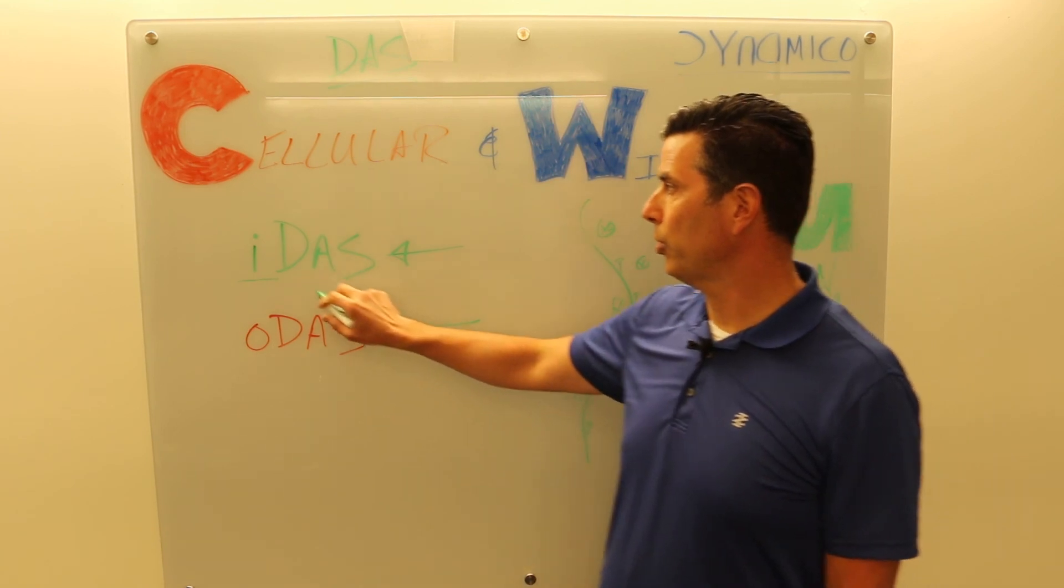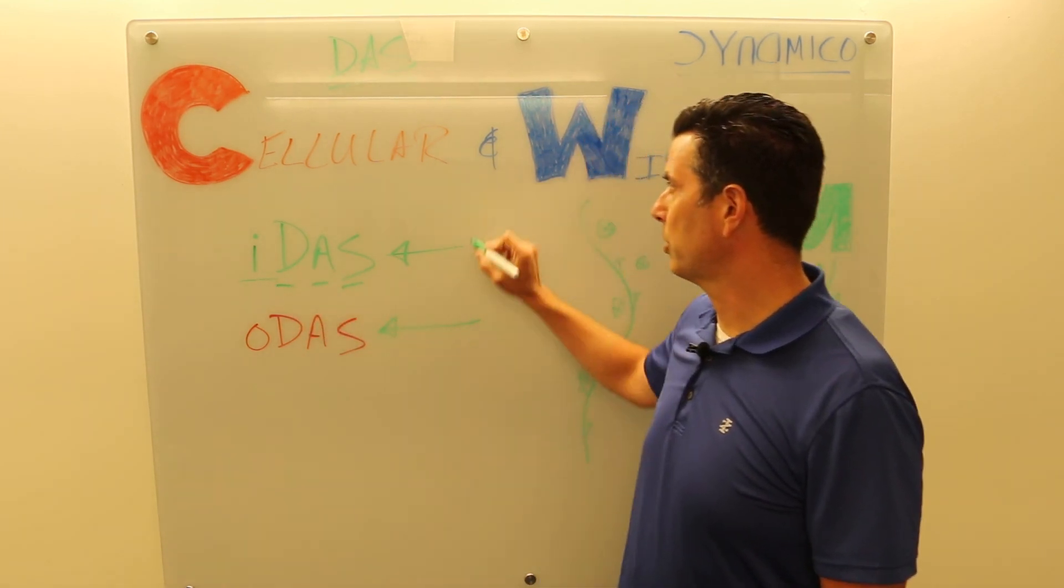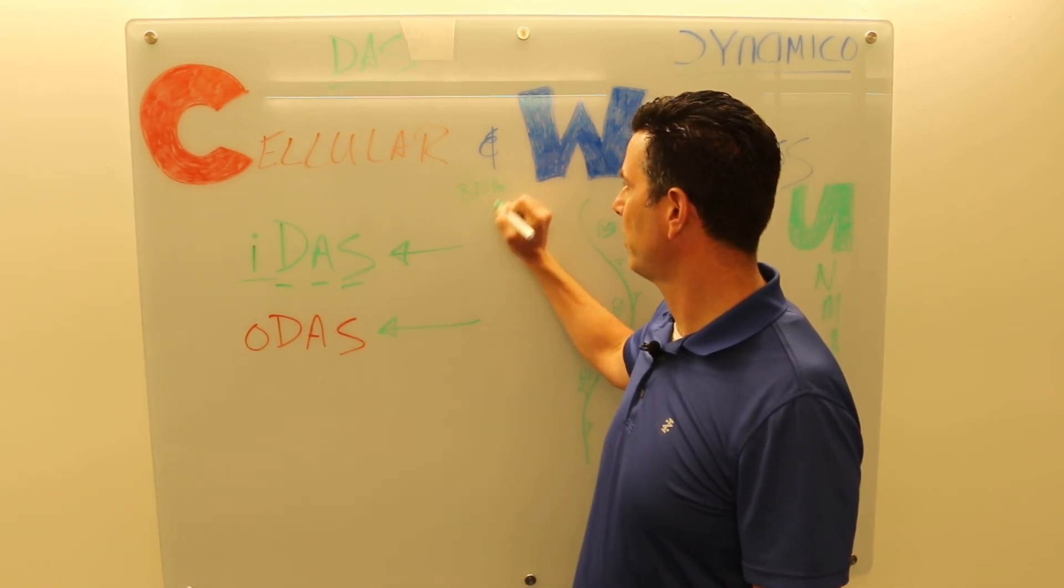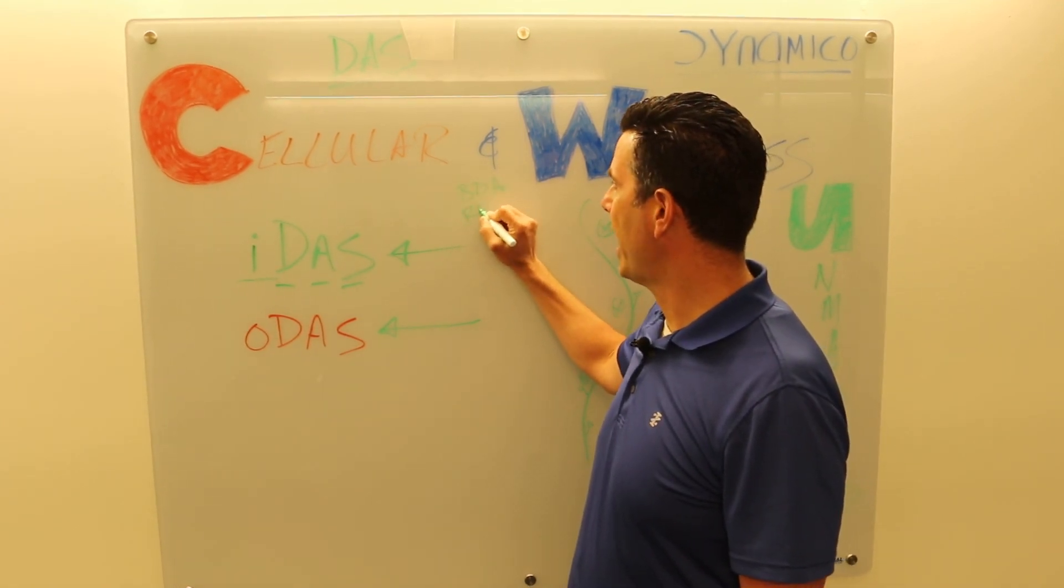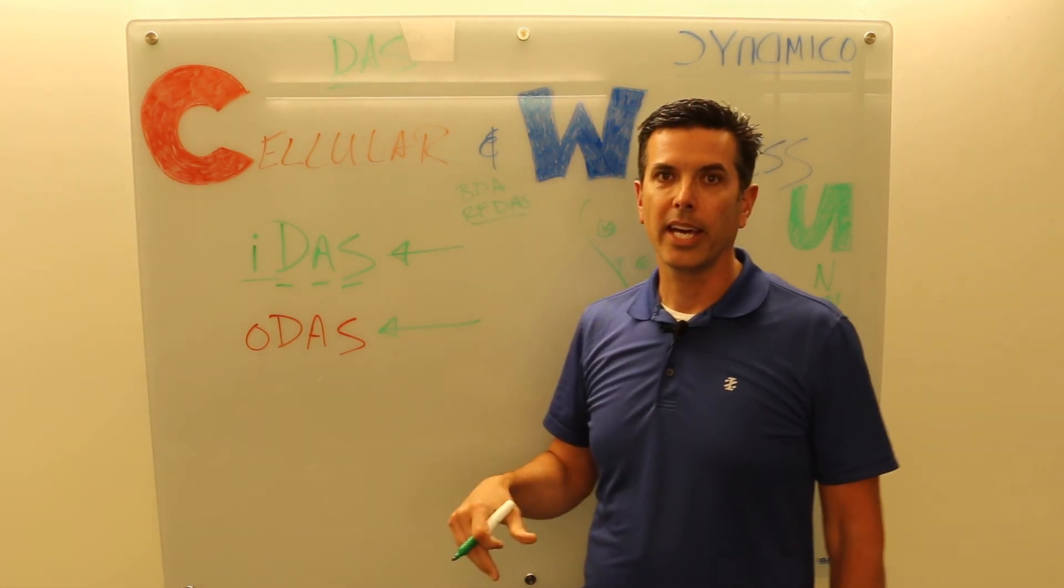But what I really want us to do today guys is show you some of the concepts behind distributing antenna systems, differences between a BDA system, bi-directional amplifier, and a radio feed DAS where the carriers will give you a radio and it plumbs into the DAS.